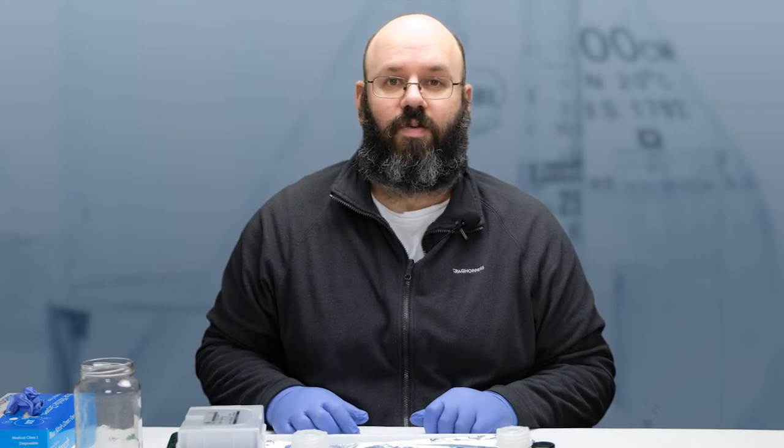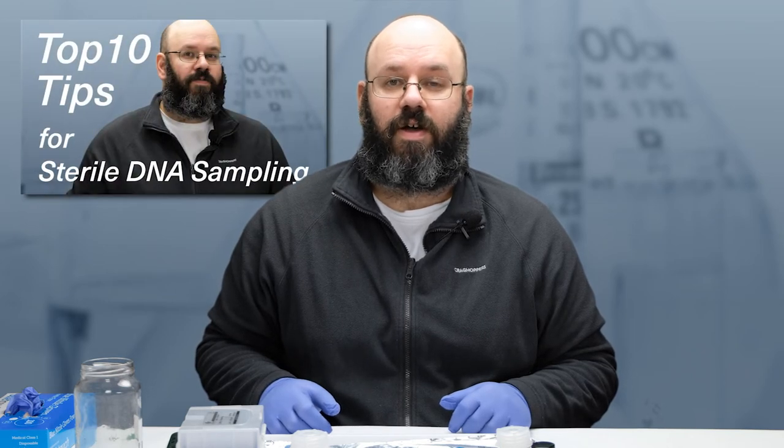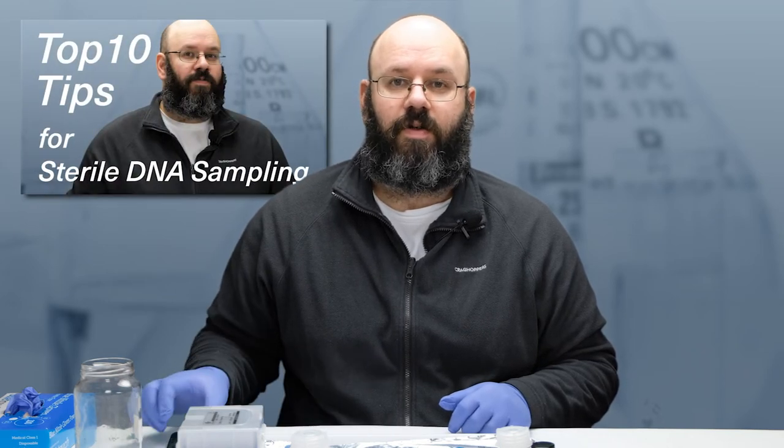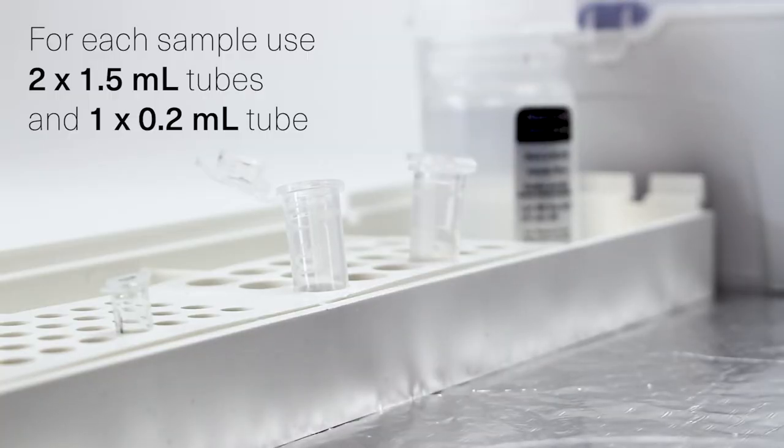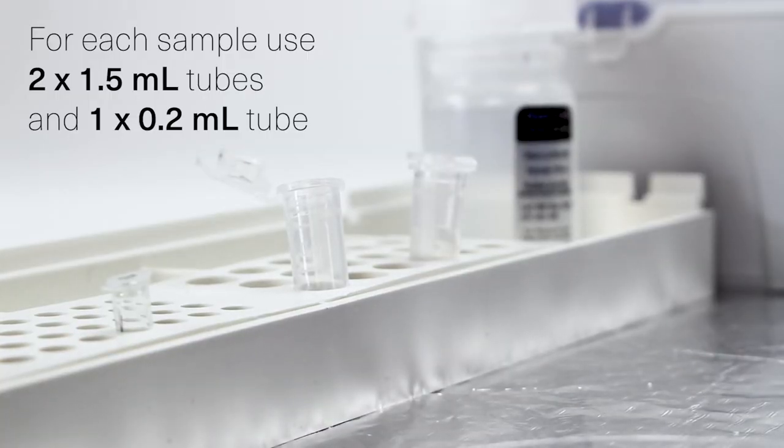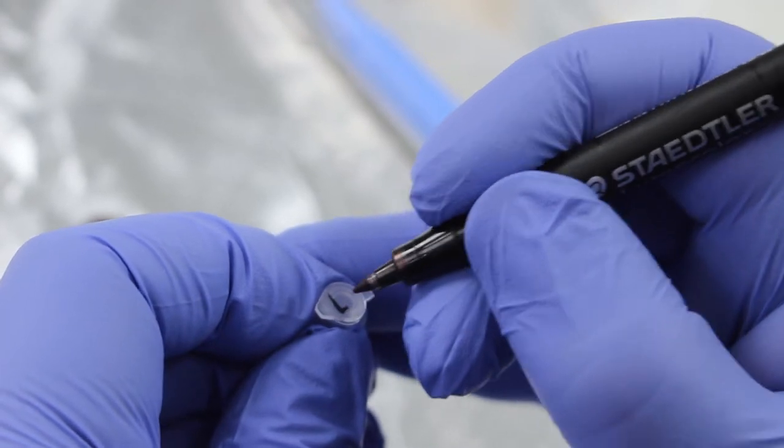First, make sure that your tools and your workspace are clean and sterile. If you want to know more about how to do this, take a look at our guide to clean sampling practices. For each sample, you'll be using two 1.5 mm tubes and a PCR tube. I've already labelled these tubes, and of course, labelling is very important if you're extracting multiple samples.